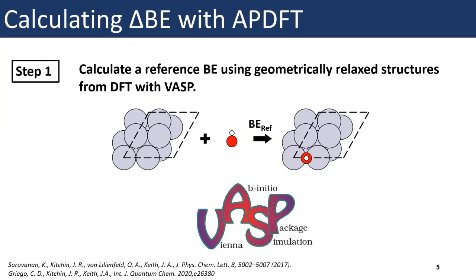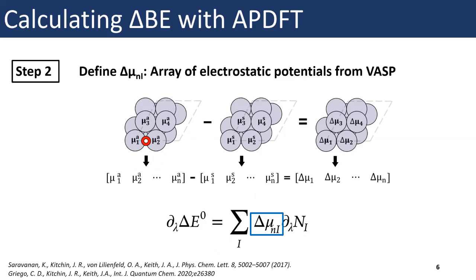Let me show you how we use APDFT to generate lots of binding energy data for many alloys. First, we take a reference binding energy calculation and evaluate all of it in VASP. Conveniently from VASP, we're able to obtain atom-centered electrostatic potentials, and we map each of these to each atom and construct an array. We take the electrostatic potential values for the clean catalyst and the catalyst with the adsorbate, take the difference, and get an array of electrostatic potential differences due to the adsorption.